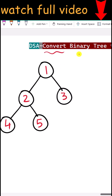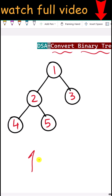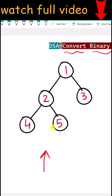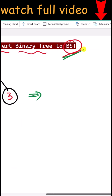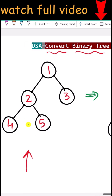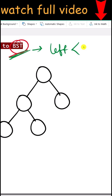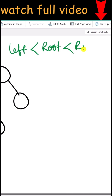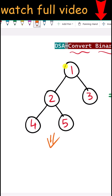Let's see how we can convert a binary tree to a binary search tree. Here is a binary tree where each node can have a maximum of two children. We're going to keep the structure of the tree the same, but shift the values so that the left child is lesser than the root and the right child is greater than the root.